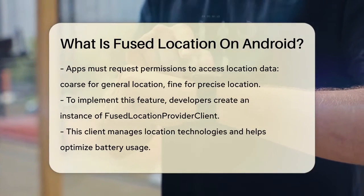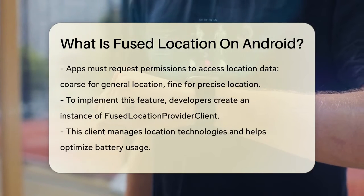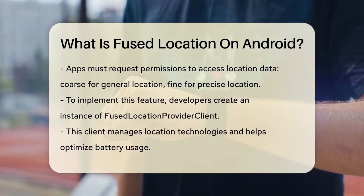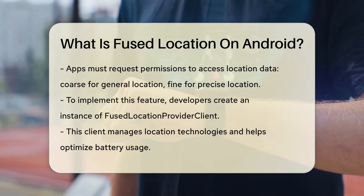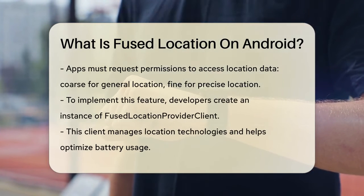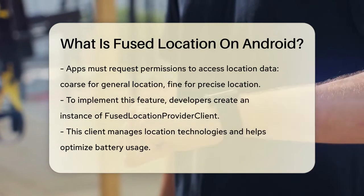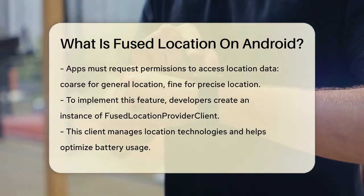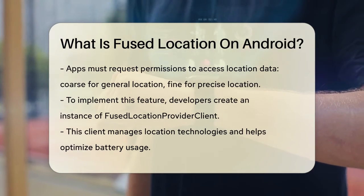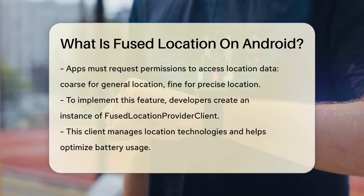To use this feature, your app needs to request the right permissions. You'll need either the Coarse Location permission, which gives you a general idea of where you are, or the Fine Location permission, which provides a much more accurate location, right down to the street level.